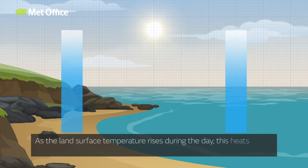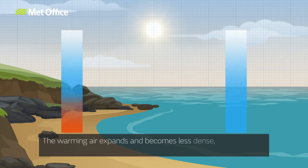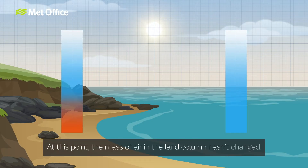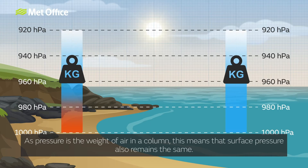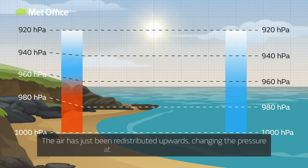As the land surface temperature rises during the day, this heats the air above it by convection. The warming air expands and becomes less dense, rising upwards in the column. At this point the mass of air in the land column hasn't changed, so as pressure is the weight of air in a column, surface pressure also remains the same. The air has just been redistributed upwards, changing the pressure at higher levels in the column.